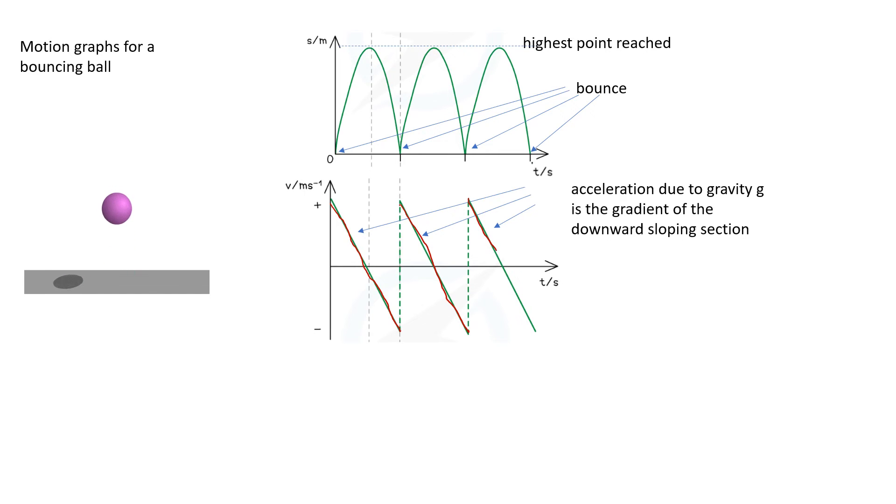The gradients of these should give us the same value, so we know we can find gradient from change in y over change in x. Change in y is delta v and change in x is delta t, and that would give us our value of g. If we found that gradient, we'd find that it's a negative gradient which is telling us that g acts in a downwards direction.